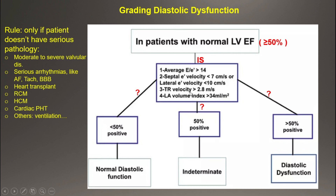For TR velocity, the cutoff is 2.8 m/s, because at this velocity pulmonary artery systolic pressure reaches the upper limit of normal — above this indicates elevated pulmonary pressure. Among these four parameters, if three are positive, the patient has diastolic dysfunction. If three are negative (only one positive), diastolic function is normal. If two are positive and two are negative, it is indeterminate and inconclusive.